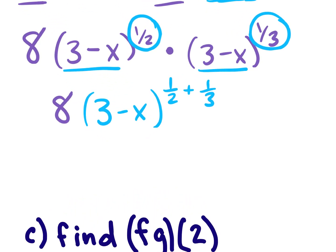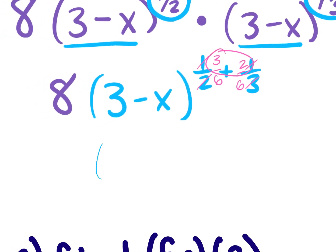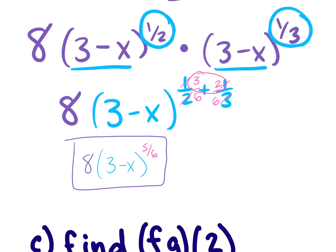Now let's add the fractions 1/2 plus 1/3. We need a common denominator of 6. Multiplying top and bottom: 1/2 becomes 3/6, and 1/3 becomes 2/6. Adding the numerators gives 5/6. So the result is 8 times (3 minus x) to the 5/6 power. The 8 stays out front, and that's our simplified answer.